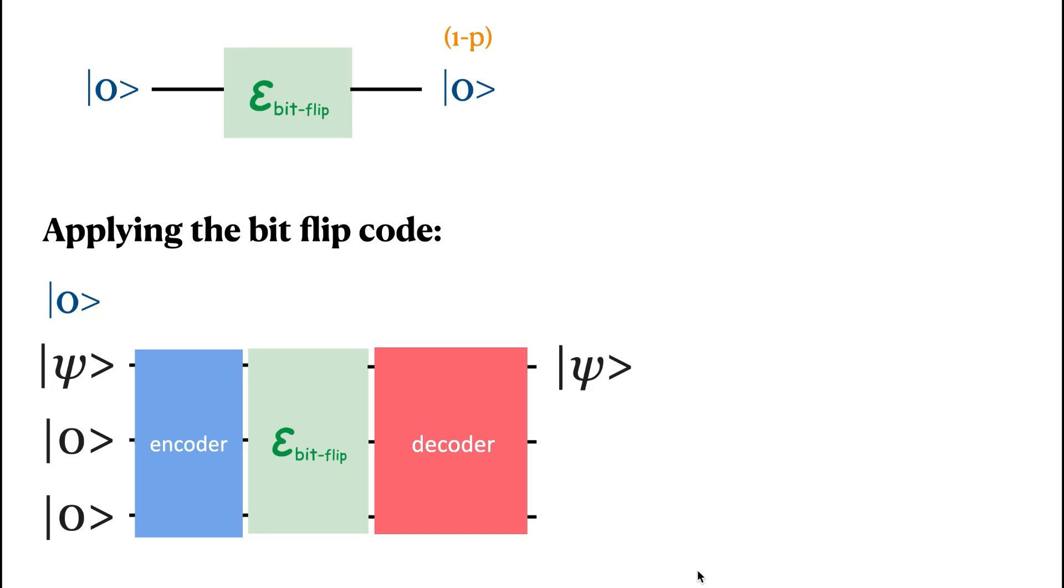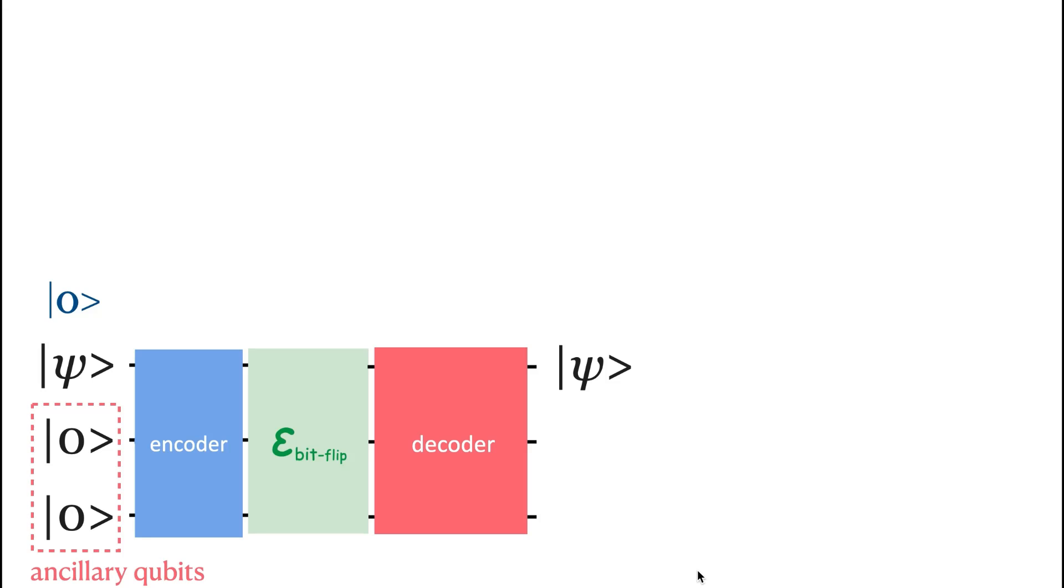So here is how we are going to apply the bitflip code to the circuit. We added two other qubits in the system. This is a three-qubit circuit that makes use of two ancillary qubits to correct one qubit.